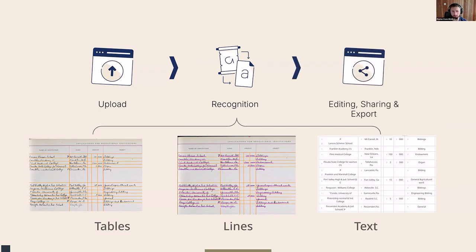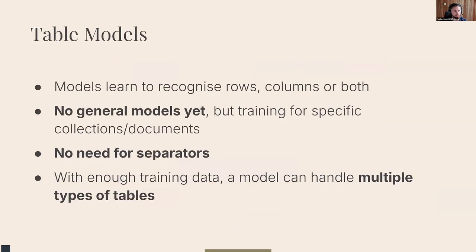The table model adds one step to our process but also adds significant value, which is why we introduced it into Transkribus. Table models work with object detection — instance segmentation recognizing rows and columns. We concluded that one approach is to have two models running: one recognizing columns and the other rows. This gives us the advantage that we're not bound to documents with visual separators — you can extract only column data or only row data from a given image.